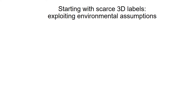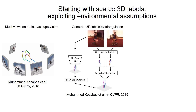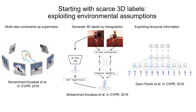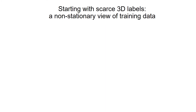Several recent works have considered training deep models when 3D labels are scarce. Multi-view consistency is used to introduce extra supervisory signal. Triangulation was performed to generate sparse 3D labels, and temporal information from video input was also exploited. However, these approaches assume a multiple-view setting and video input. In this study, we only use single view during training, but take a different approach when starting with scarce 3D labels.